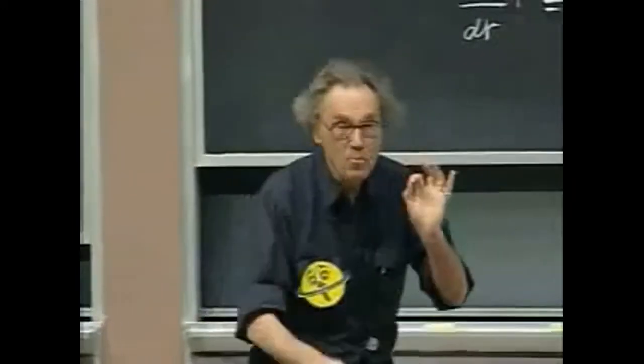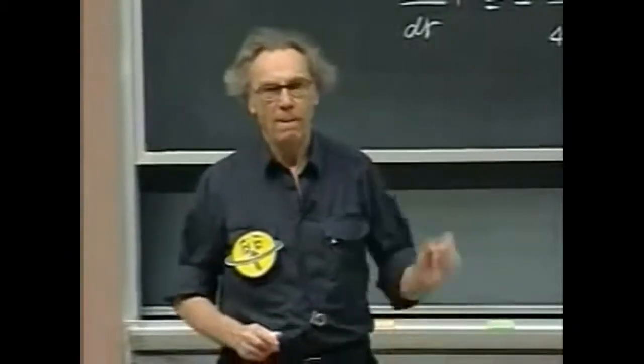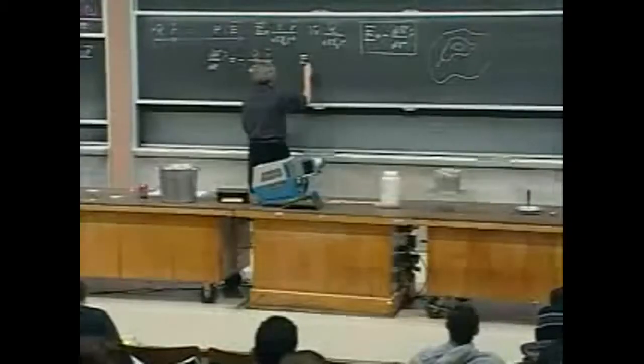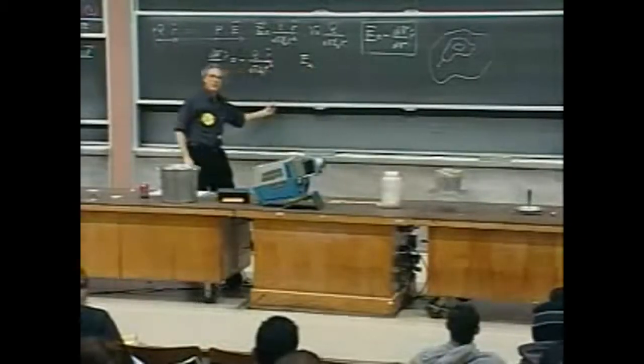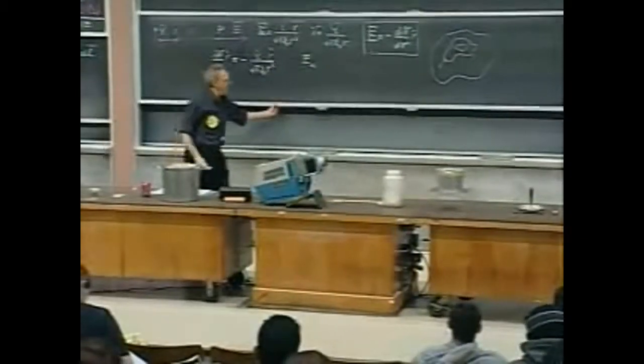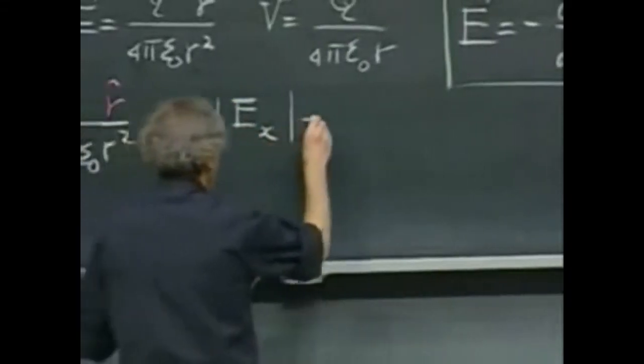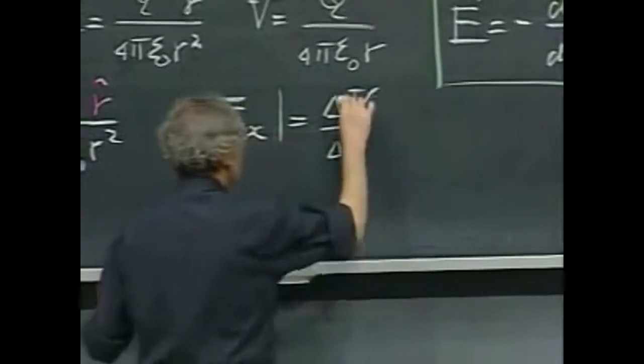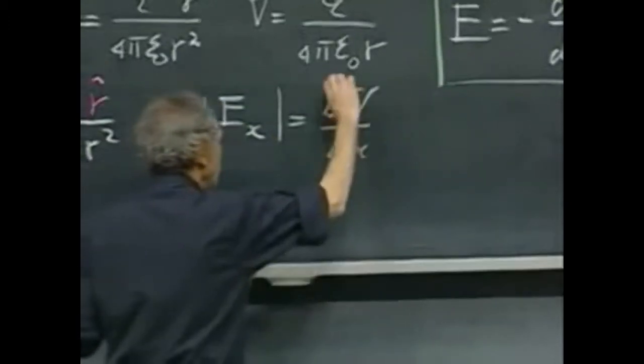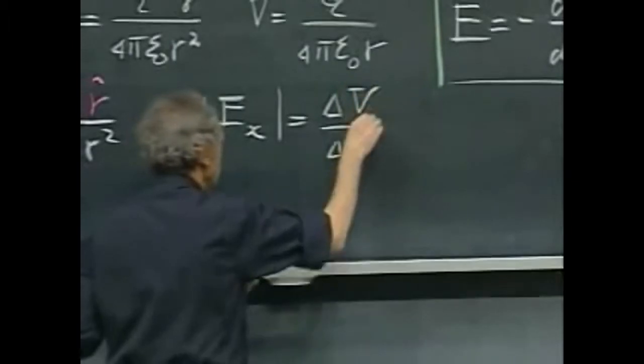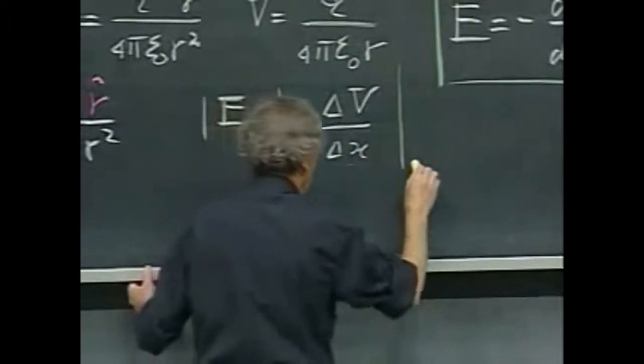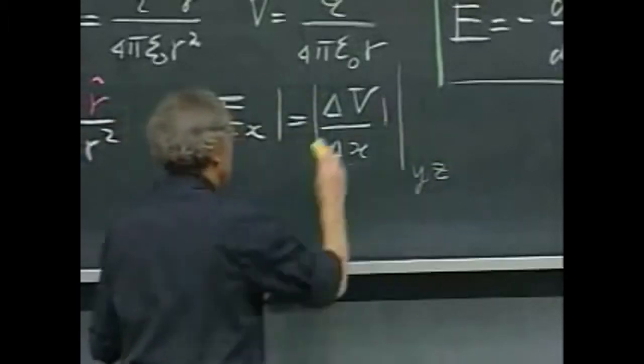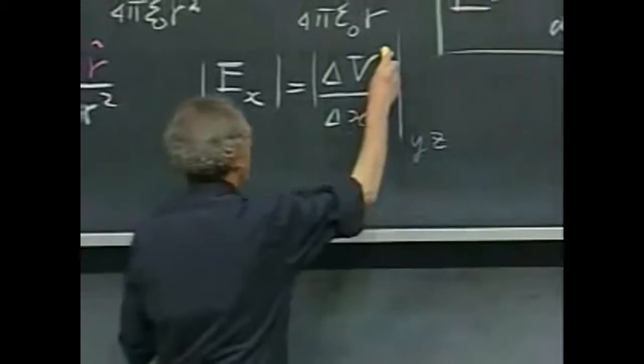If I do measure a difference in potential, then the x component of the electric field—its magnitude would be the potential difference divided by that little sidestep that I have made, delta x. It would be the potential difference that I measure divided by that little sidestep. And I keep y and z constant. And these are magnitudes. That's why I put these vertical bars here.